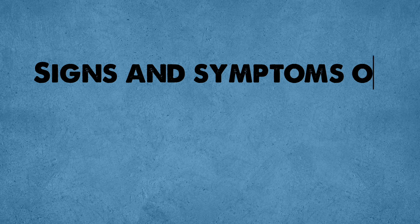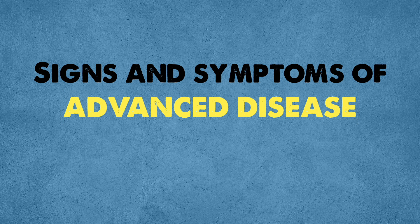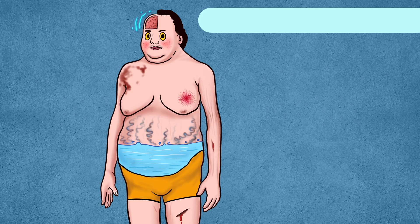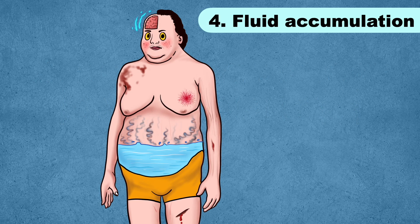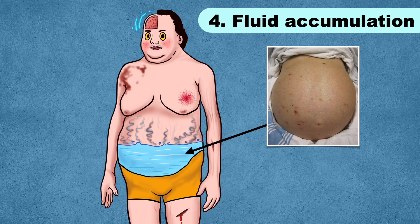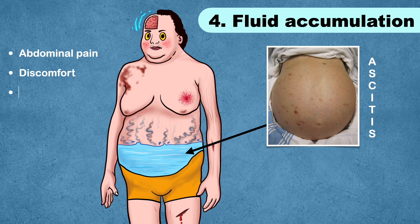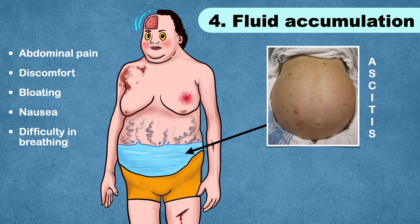A significant indicator of advanced disease is the accumulation of fluid in the abdominal cavity, known as ascites. This fluid buildup can cause a range of symptoms including abdominal pain, discomfort, bloating, nausea, and in severe cases, breathing difficulties.